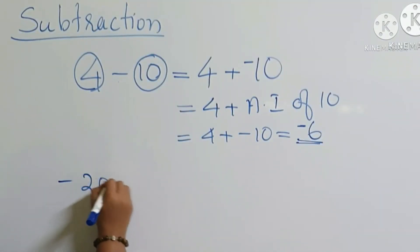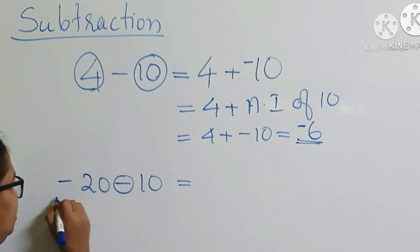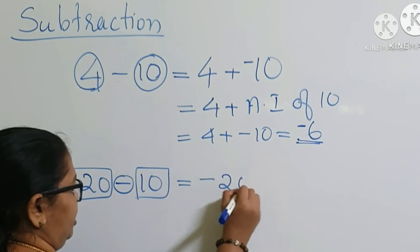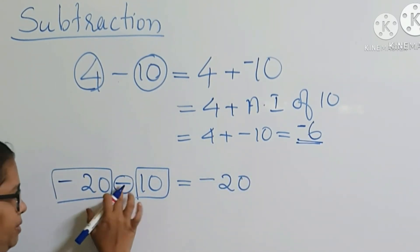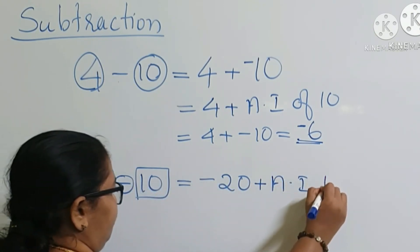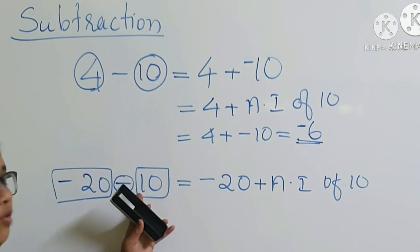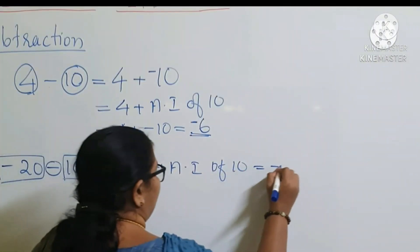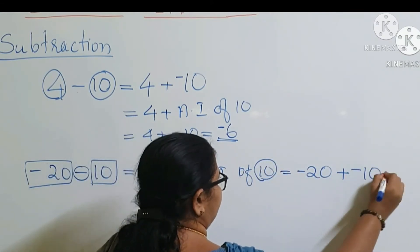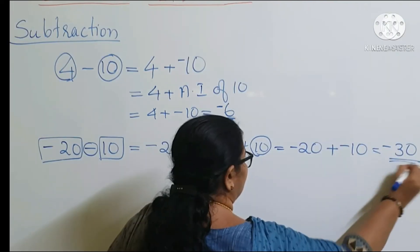Another example: negative 20 minus 10. This is a subtraction. The numbers are minus 20 and 10. We write minus 20 as the first number, then change the subtraction to plus, and take the additive inverse of 10, which is minus 10. So this becomes minus 20 plus minus 10.